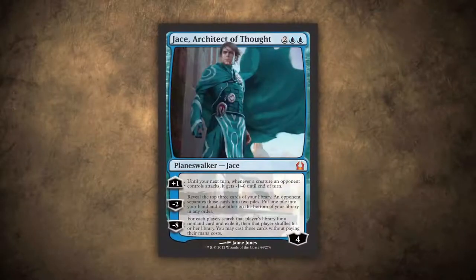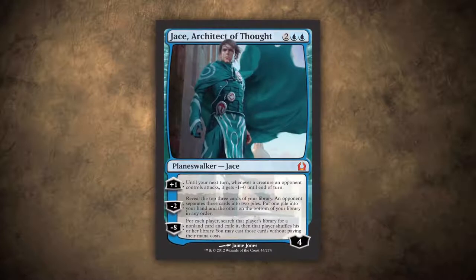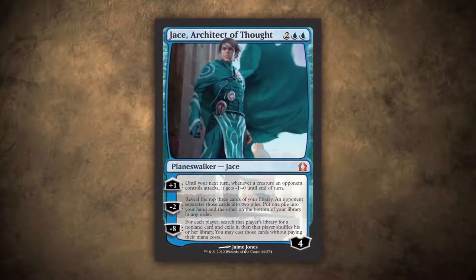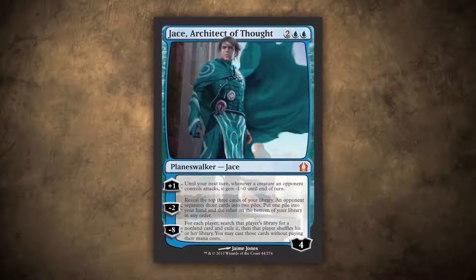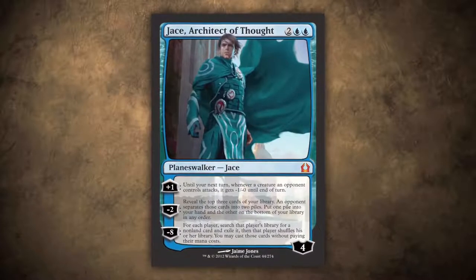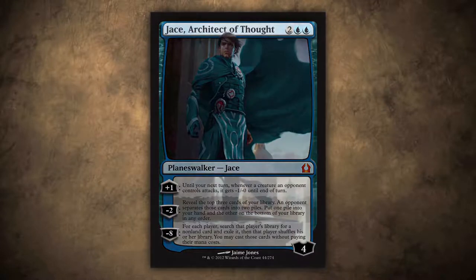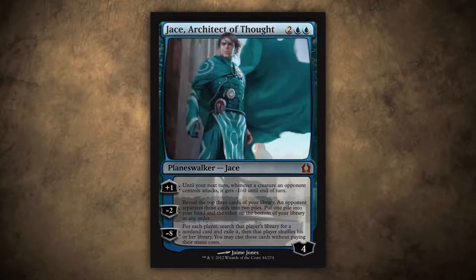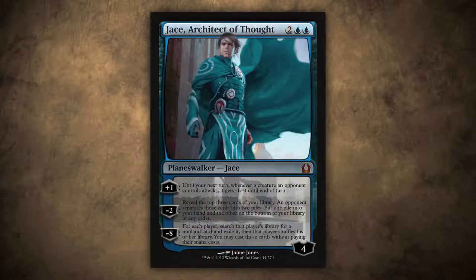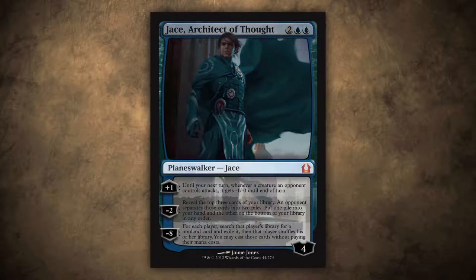Here we have Jace, Architect of Thought. Let's take a look at the card from the very top to bottom and review exactly how it works and what each of the things written on it mean. We have its name and its mana cost and then the art. Planeswalker art is unique in that it always goes beyond the borders of the frame of the card. Then we have the planeswalker type and then its subtype.